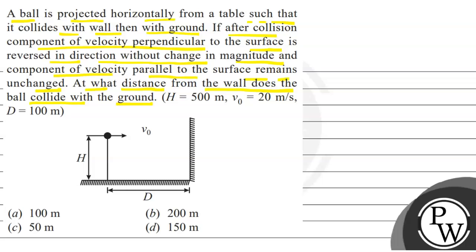H equals 500 meters, V₀ (initial velocity) equals 20 meters per second, and capital D equals 100 meters. Capital D is shown in the diagram. The options are 100 meters, 200 meters, 50 meters, and 150 meters. We have to choose the correct option.